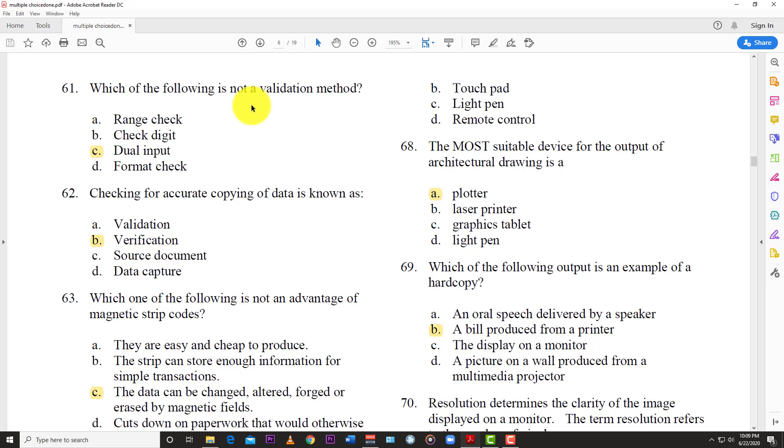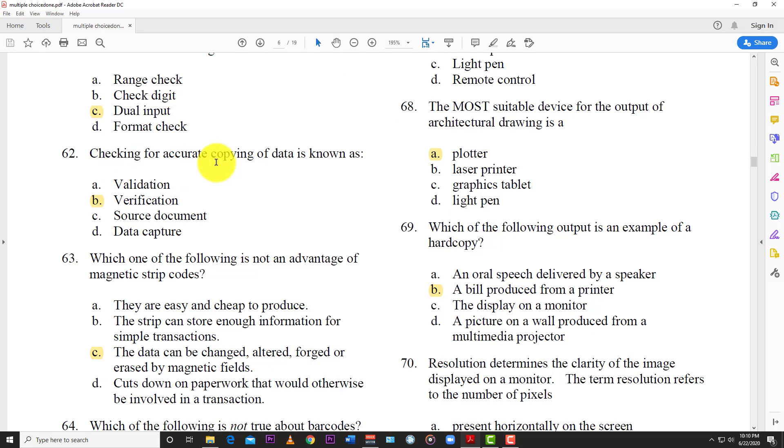Question 61: Which of the following is not a validation method? And so the answer is C, dual input. Question 62: Checking for accurate copying of data is known as? And the answer is B, verification.